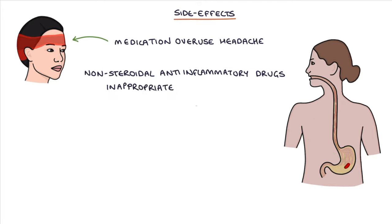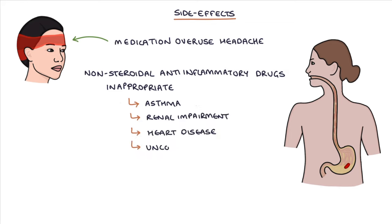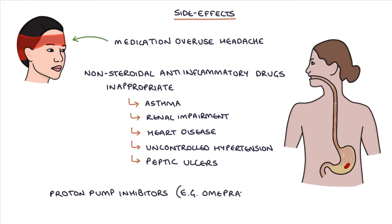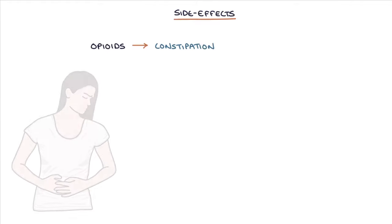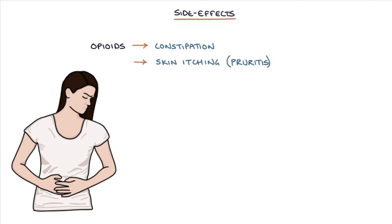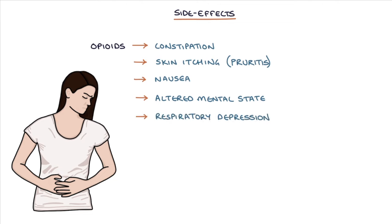NSAIDs may be inappropriate or contraindicated in patients with asthma, renal impairment, heart disease, uncontrolled hypertension, or peptic ulcers. Proton pump inhibitors, for example omeprazole or lansoprazole, are often co-prescribed with NSAIDs to reduce the risk of gastrointestinal side effects such as acid reflux, gastritis, and peptic ulcers. The key side effects of opioids are constipation, skin itching (pruritus), nausea, altered mental state with sedation, cognitive impairment or confusion, and respiratory depression, usually only with larger doses in opioid-naive patients.